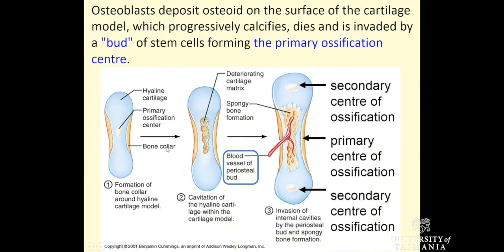With bone growth, after that hyaline cartilage model is formed, the cells within the perichondrium differentiate and form a periosteum. Those cells on the lining differentiate from becoming new chondroblasts into new osteoblasts. They begin to secrete osteoid, which then becomes mineralised, and we get this little bony collar forming around the outside of the bone, around the diaphysis region — that's going to form the shaft of our bone. So we get this bony collar around the hyaline cartilage model because our perichondrium has differentiated into periosteum, the osteoblasts laid down bone matrix, and that became mineralised.